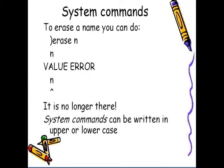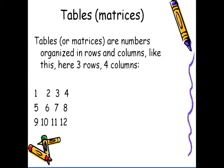System commands can be written in either upper or lower case. Tables, also called matrices, are numbers organized in rows and columns like this. For example, here we have three rows and four columns of the numbers 1 to 12.